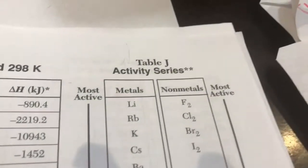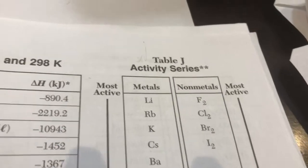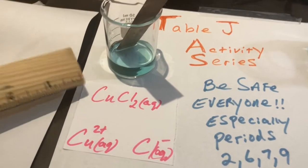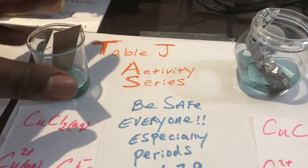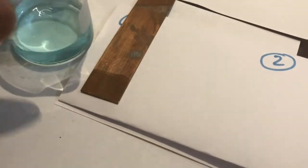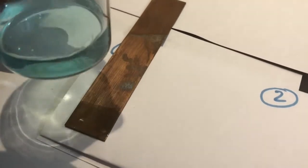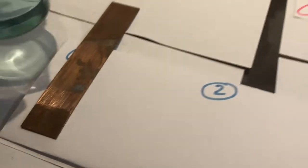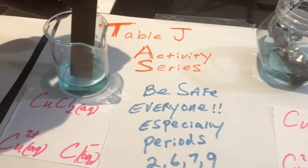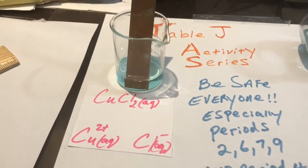We're making our predictions about the three situations with Table J activity series. Let's go to situation number one, where we had the copper ions and we put copper solid inside. Doing an aerial view — we see the solution looks pretty clear, and the copper metal looks pretty much unaffected. Copper essentially will not react with itself, so copper ions with copper solid — there is no reaction.